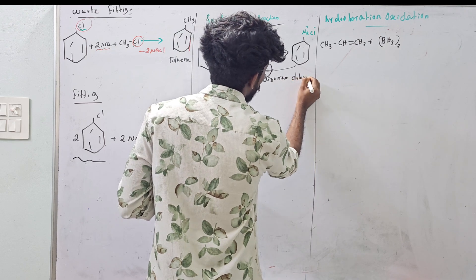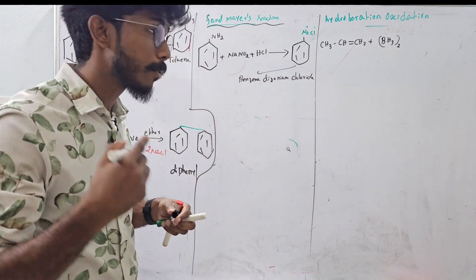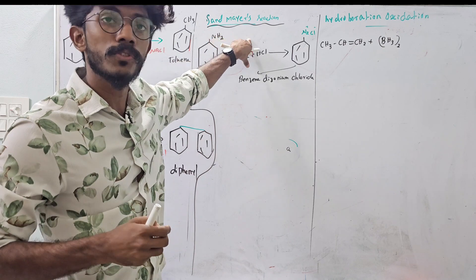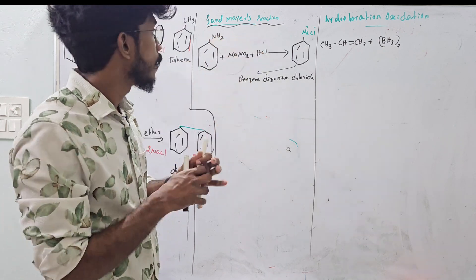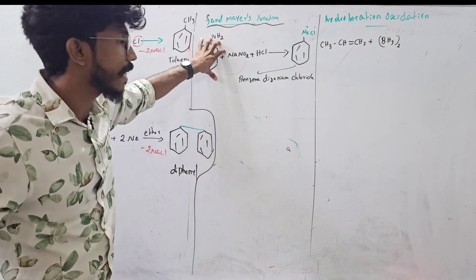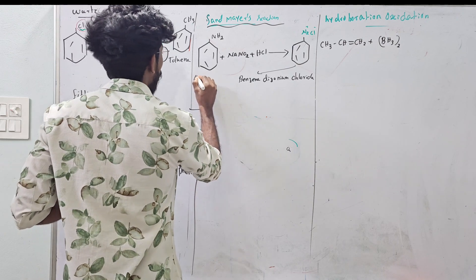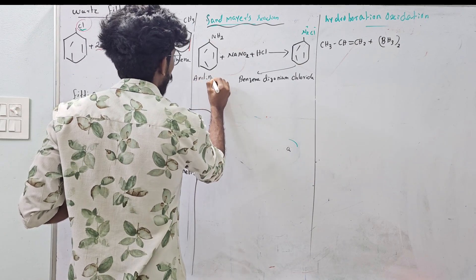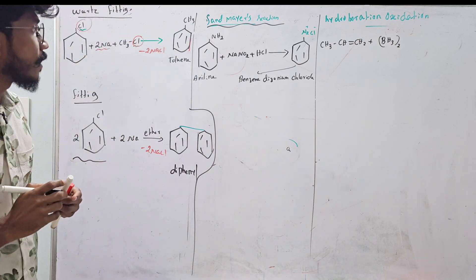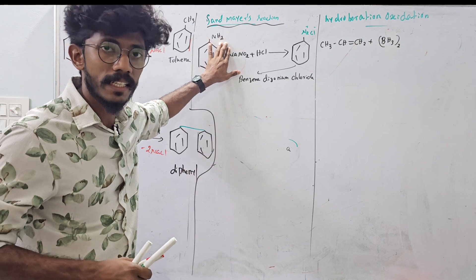Simply, Benzene Diazonium Salt — which includes chloride and bromide — gives Benzene Diazonium Bromide. So this is a diazotization reaction. The first step of the Sandmeyer reaction: aniline is treated to give N2Cl, which is Benzene Diazonium Chloride.